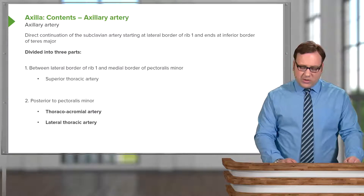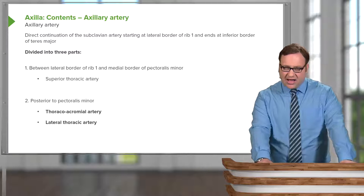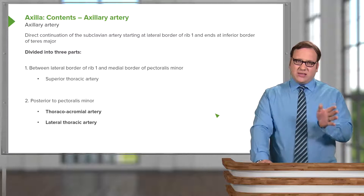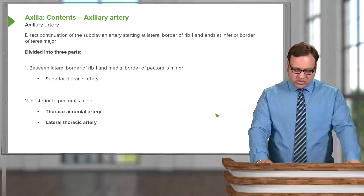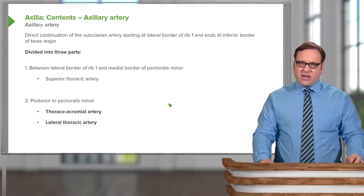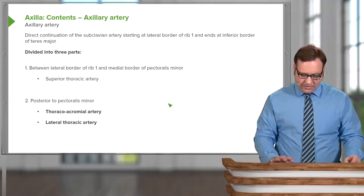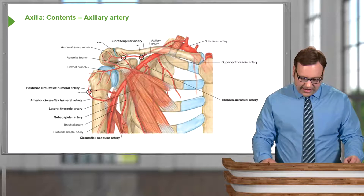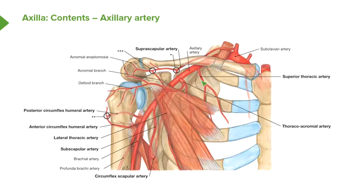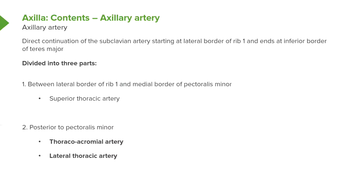The first part of the axillary artery, between the clavicle and the superior border of pectoralis minor, gives rise to one blood vessel — the superior thoracic artery — which goes to supply the superior aspect of the thoracic chest wall.